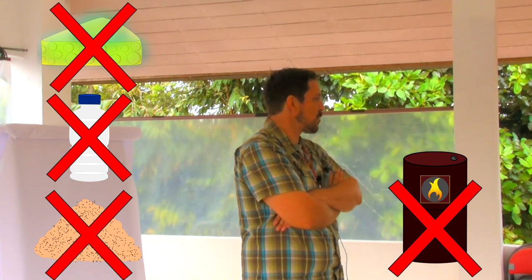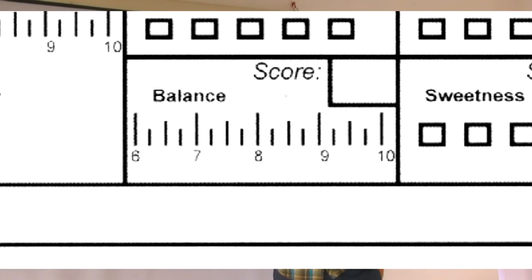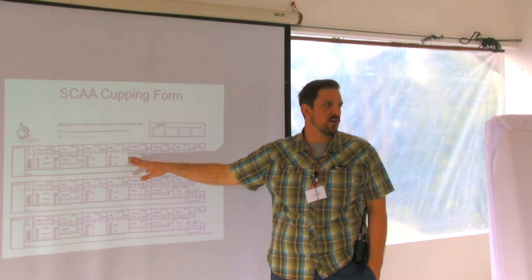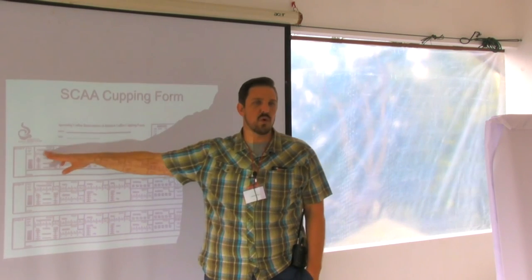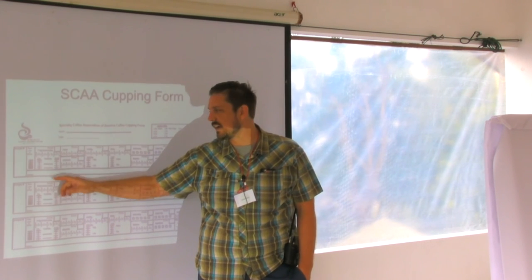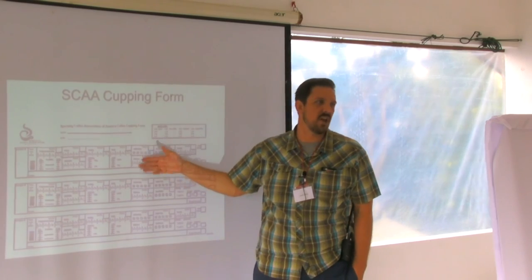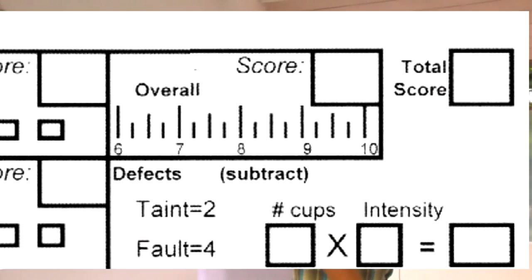Balance is a score on how all the elements go together — is it smooth, does it all fit nicely? It's slightly subjective but fairly clear: if the scores are all similar you can say it's balanced; if fragrance and flavor are weak but aftertaste and acidity are strong, it's an unbalanced cup. Overall is the very end, and it's the only place where you as the cupper can give your personal opinion of the coffee.